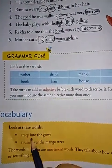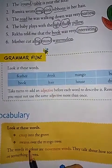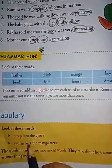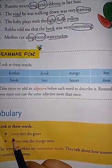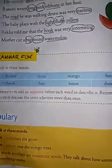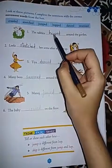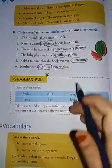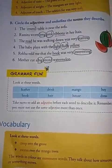Now the vocabulary part. Look at these words: creep into the grove, soared over the mango trees. The words in color are movement words — they talk about how someone or something moves. Creep and soar are movement words. Based on this, you have to fill in the blanks. We will be seeing this in the next two videos. Till then, go through these adjective bits. That's all for today. Take care. Bye-bye.